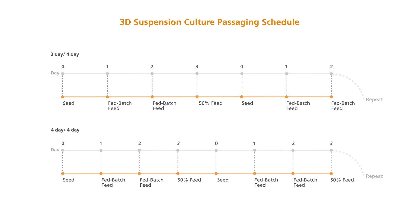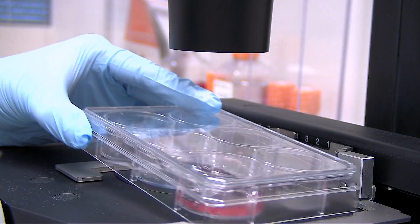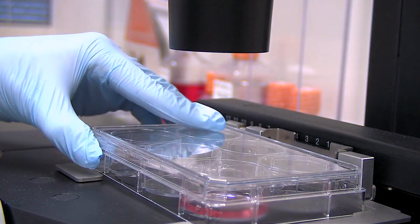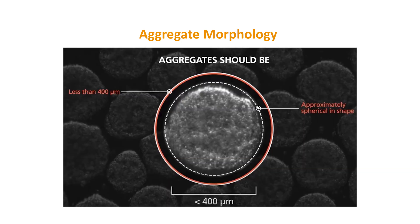3D suspension cultures can either be passaged on a 3-day to 4-day alternating schedule or on a 4-day to 4-day schedule. Before passaging, visually inspect the aggregates under a microscope to ensure the mean aggregate size does not exceed 400 microns and that the aggregates are round and pockmarked.